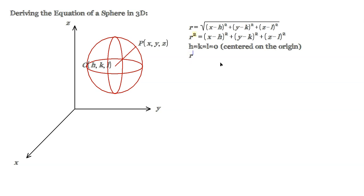In that case, you get a sphere centered on the origin, and the equation of the sphere is r² = x² + y² + z². And that's the equation of the sphere at the origin.